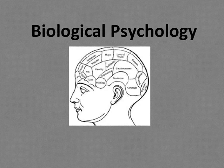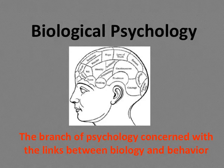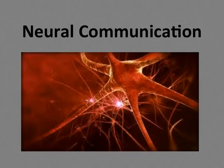Biological psychology is the branch of psychology that is concerned with the links between biology and behavior. In 1800, Franz Gall suggested that the bumps of the skull represent mental abilities. His theory, though incorrect, nevertheless proposed that different mental abilities could have a biological basis. At the very root of the biology of behavior and thought is the neuron.